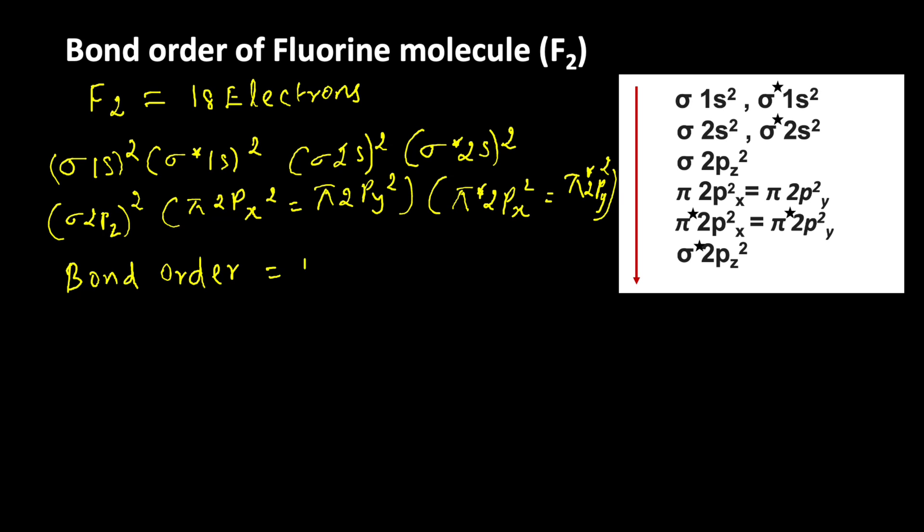Bond order is equal to Nb minus Na divided by 2, where Nb is the number of bonding electrons and Na is the number of anti-bonding electrons.